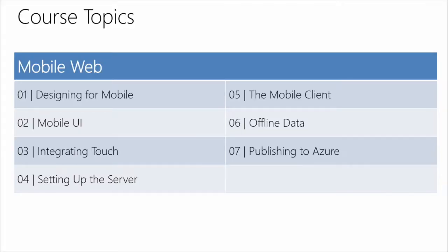In Module 6 we'll look at offline data, talk about caching, storage inside local and session storage, and the possibility of geolocation. Then finally Module 7 — we're going to publish out to Azure, so you can see there's nothing up our sleeves. I've slipped in a little surprise: I'll show you a few different ways to publish to Azure, and I've also included a discussion about the multi-device hybrid app tooling available in Visual Studio.